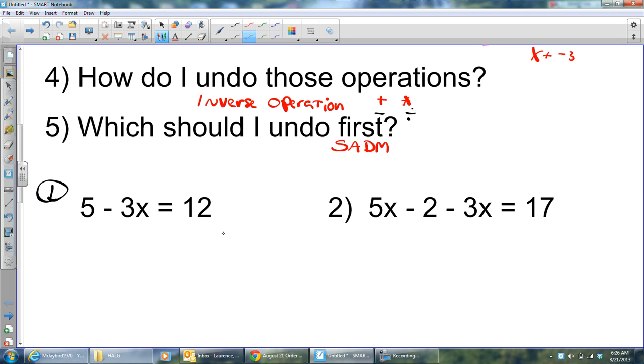I've got 5 minus 3x equals 12. And I ask myself, what's my goal? Well, I want to get this x here alone. What numbers are keeping the x from being alone? There's a 5 and there's a 3. Okay, how are they attached? Well, it sure looks like the 3 is being attached by multiplication, right, 3 times x.